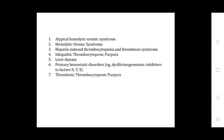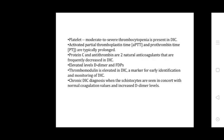Differential diagnosis includes atypical hemolytic uremic syndrome, hemolytic uremic syndrome, heparin-induced thrombocytopenia and thrombosis syndrome, idiopathic thrombocytopenic purpura, liver disease, primary hemostatic disorders such as dysfibrinogenemias and inhibitors to factors 2, 5, and 10, and thrombotic thrombocytopenic purpura.